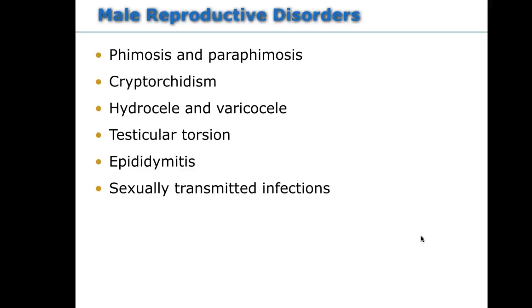Testicular torsion is a surgical emergency — it can result in loss of the testicle. If a male gets hit in the testicles and they twist, that can cut off blood supply to the testicle. If a patient comes in with testicular pain, they are a very high priority: an ultrasound is done quickly to make sure there is good blood flow to the testicle.